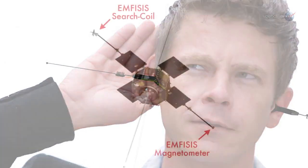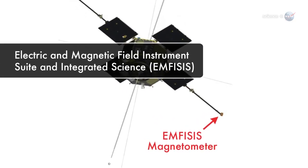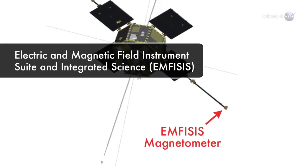says Kletzing, whose team at the University of Iowa built the EMFISIS electric and magnetic field instrument suite and integrated science receiver used to pick up the signals.